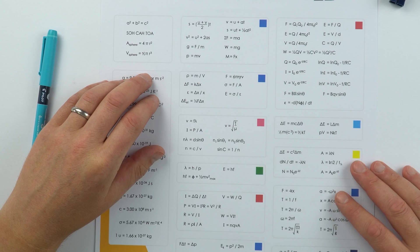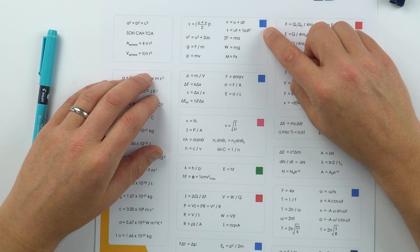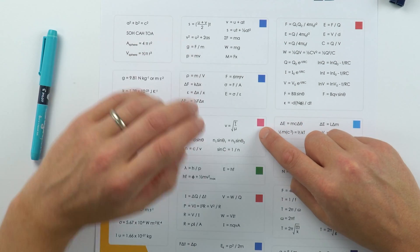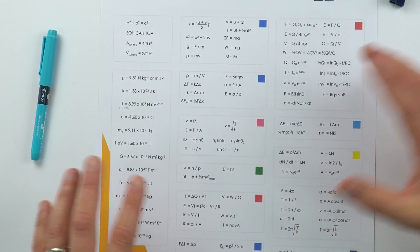I also have all of the equations here. I've got this blue square over here, and this one's to do with forces and motion. If it's pink, it's to do with waves. If it's red, it's to do with electricity, and so on.